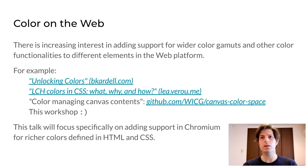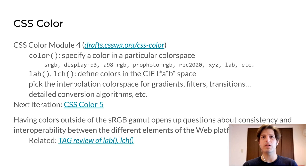There are ongoing efforts to add that support to different components of the web platform. For example, there is already pretty good support for images that use a color space other than standard RGB. In Chromium there is now an intent to experiment with additional color spaces in Canvas, WebGL and WebGPU. In this talk I am going to focus specifically on adding support for richer colors in HTML and CSS.